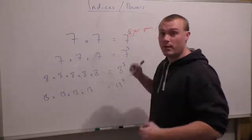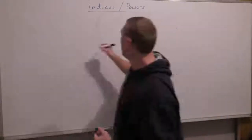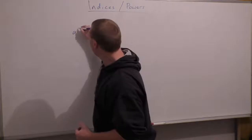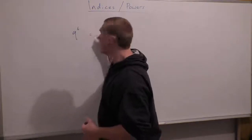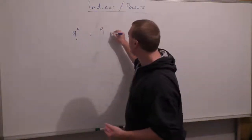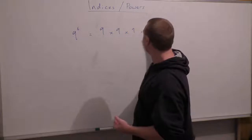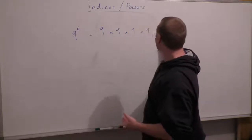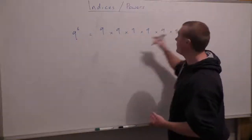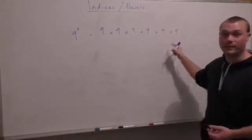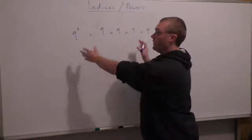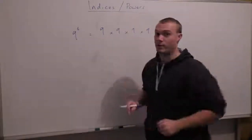Now, the same can be done the other way around. If we've got 9 to the power of 6, that's just 9 times 9 times 9 times 9 times 9 times 9 — six 9s. And that's how we can expand 9 to the power of 6.